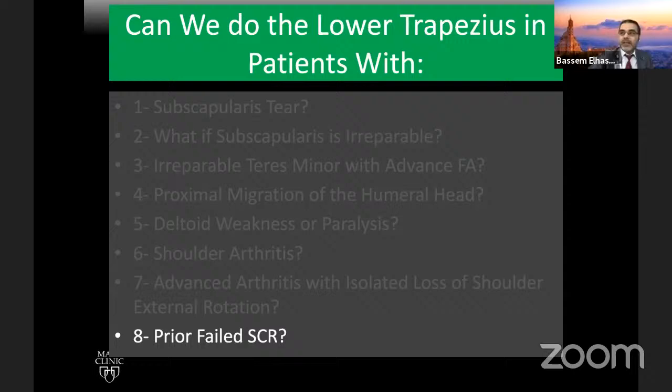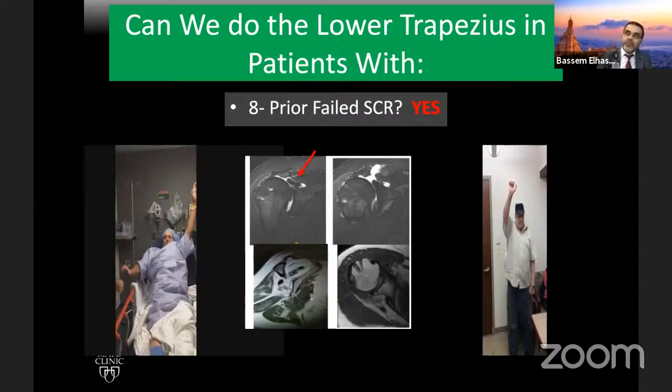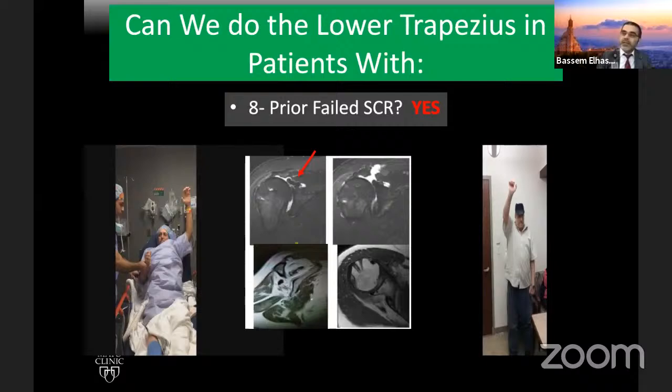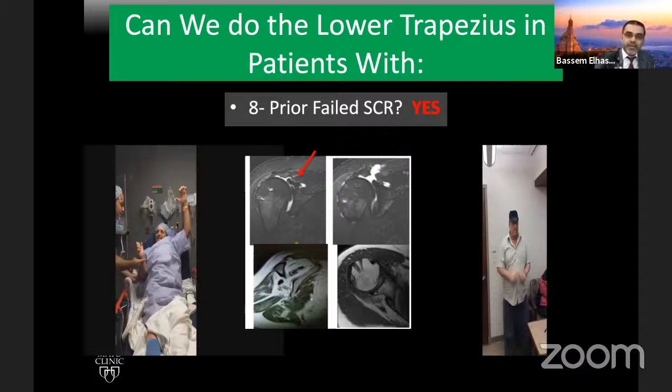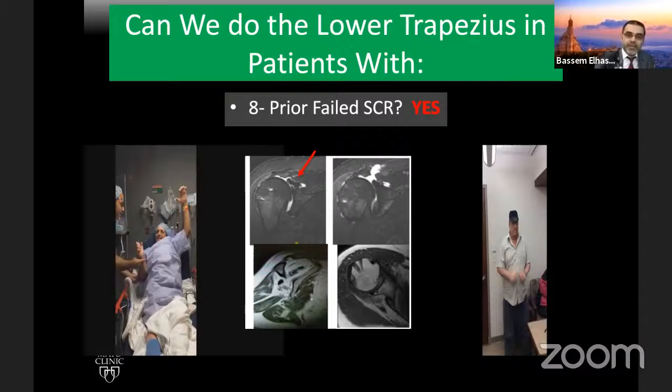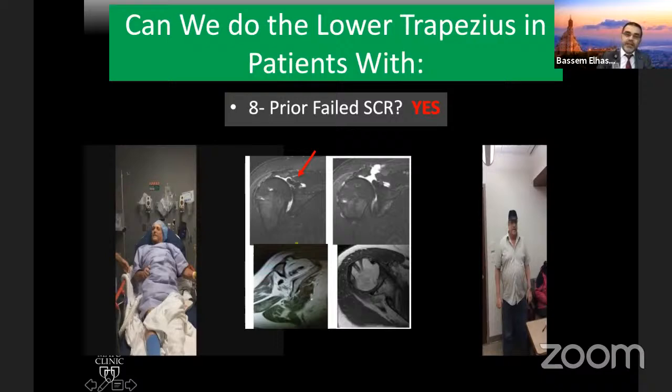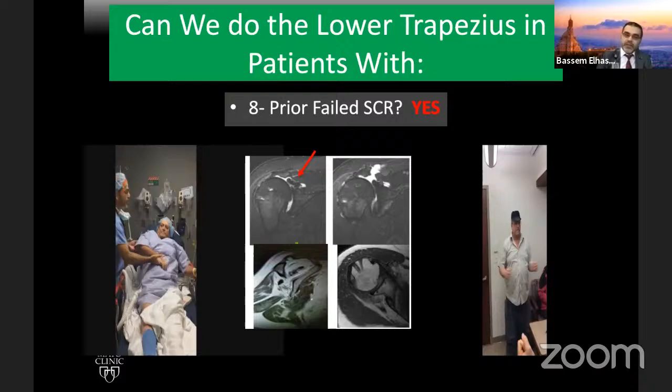What about failed SCR? Absolutely yes — we currently have 18 patients with failed SCR for various reasons who had lower trapezius transfer, and they've done very well. This patient — also a farmer, and interestingly he has Charcot-Marie-Tooth disease — is very active. We did lower trapezius transfer after his failed SCR and he did extremely well. Now, what else can we do to minimize failure for lower trapezius? We've talked about patient selection. Let's talk about surgical technique.